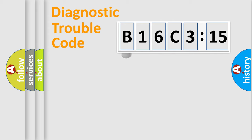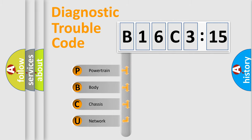Powertrain, Body, Chassis, and Network. This distribution is defined in the first character code.